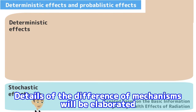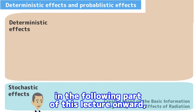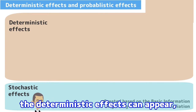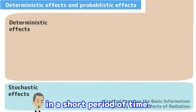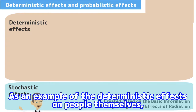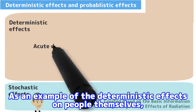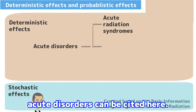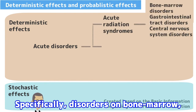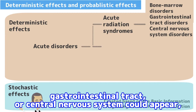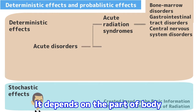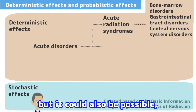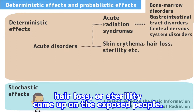Details of the difference of mechanisms will be elaborated in the following part of this lecture. But first of all, the deterministic effects can appear when people are exposed to a comparatively large amount of radiation in a short period of time. As an example of the deterministic effects on people themselves, acute disorders can be cited. Specifically, disorders on bone marrow, gastrointestinal tract, or central nervous system could appear, which are called acute radiation syndromes. Depending on the part of the body exposed to radiation, effects like skin erythema, hair loss, or sterility could also come up.